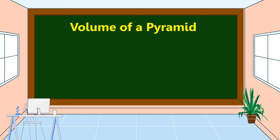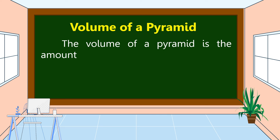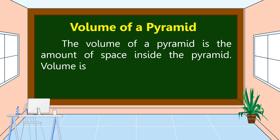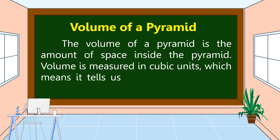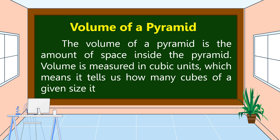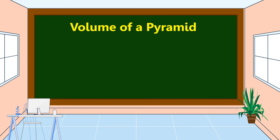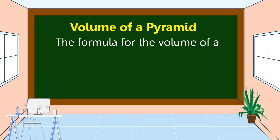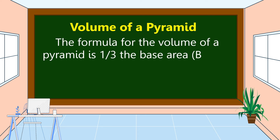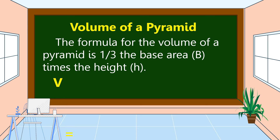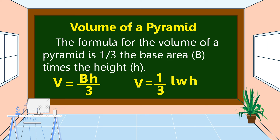Volume of a Pyramid. The volume of a pyramid is the amount of space inside the pyramid. Volume is measured in cubic units, which means it tells us how many cubes of a given size it takes to fill the pyramid. The formula for the volume of a pyramid is one-third the base area, characterized by capital letter B, times the height, represented by small letter H. So V = (Area of base × height) ÷ 3, or V = (1/3) × length × width × height.